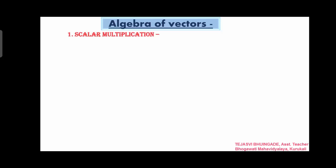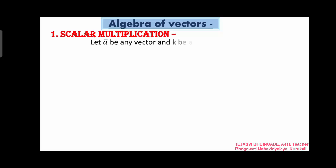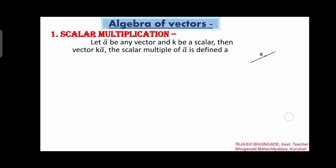Actually he 4 points apan study karahe chaahe. First one: scalar multiplication — vector che scalar multiplication kontya badhe te ne khetle chaate. Let ā be any vector, and k be a scalar. ā haa vector consider ke le let aahe, and k haa kontya hi non-zero scalar consider ke le let aahe. Then vector kā — the scalar multiple of ā is defined as a vector whose magnitude is |kā|, that means k times ā. This is scalar multiplication itself.